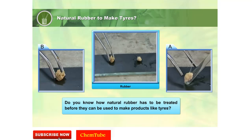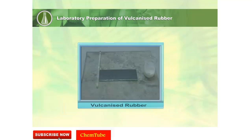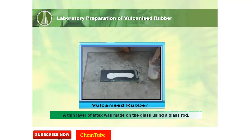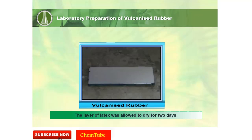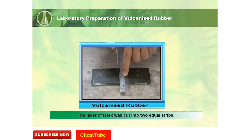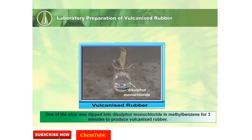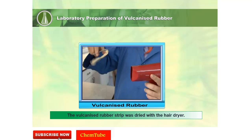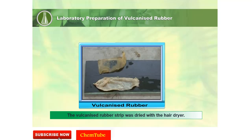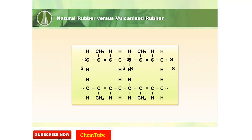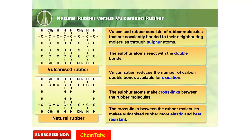Do you know how natural rubber has to be treated before it can be used to make products like tires? Vulcanization of rubber makes rubber more elastic, durable, stronger, and heat-resistant.